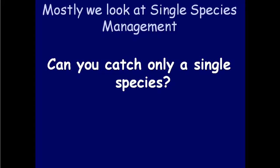We look at the stock of snapper, or ling, or hoki, or paua, or crayfish. Species like gurnard, snapper, kingfish, crayfish, trevally, and kahawai all inhabit the same habitat with only slight variations. But can you catch only one of these species when you go out and commercially fish?